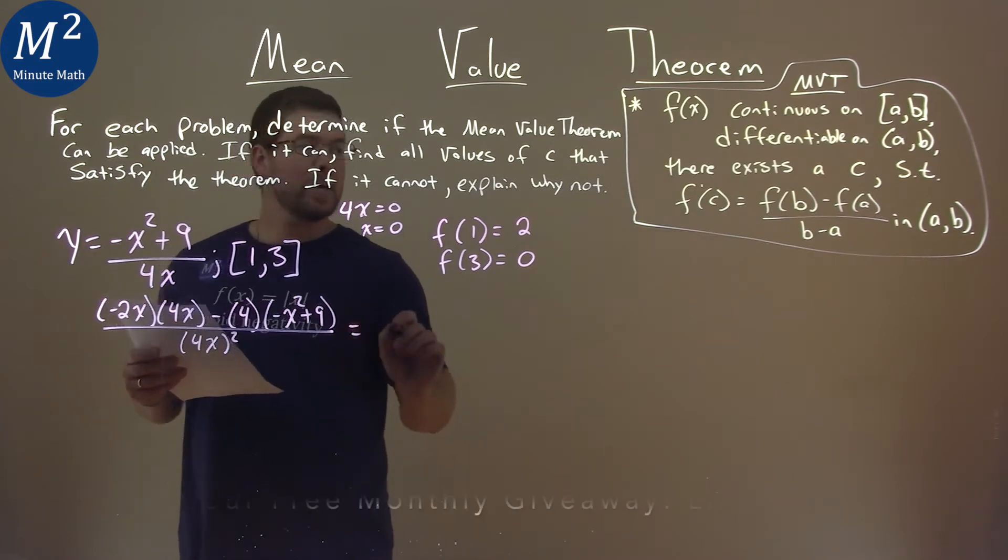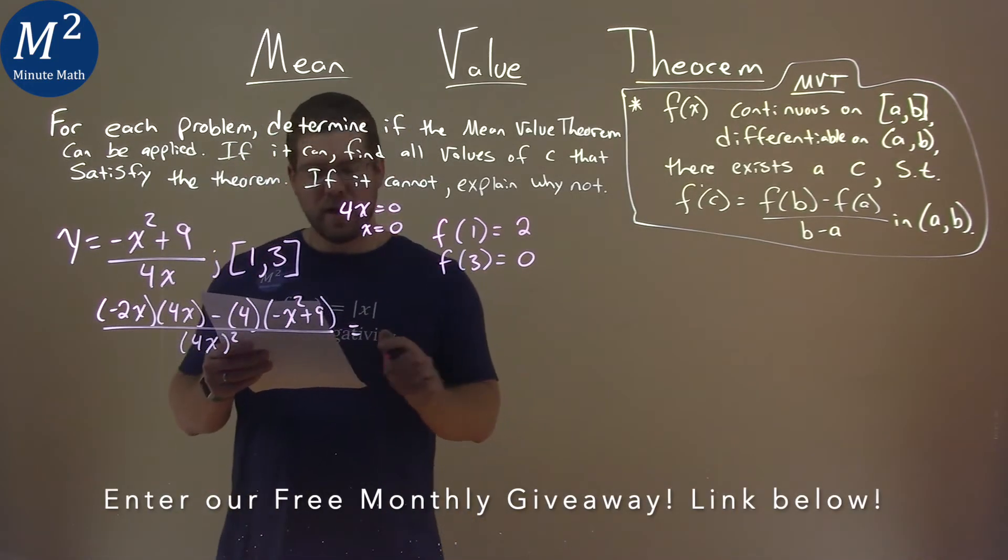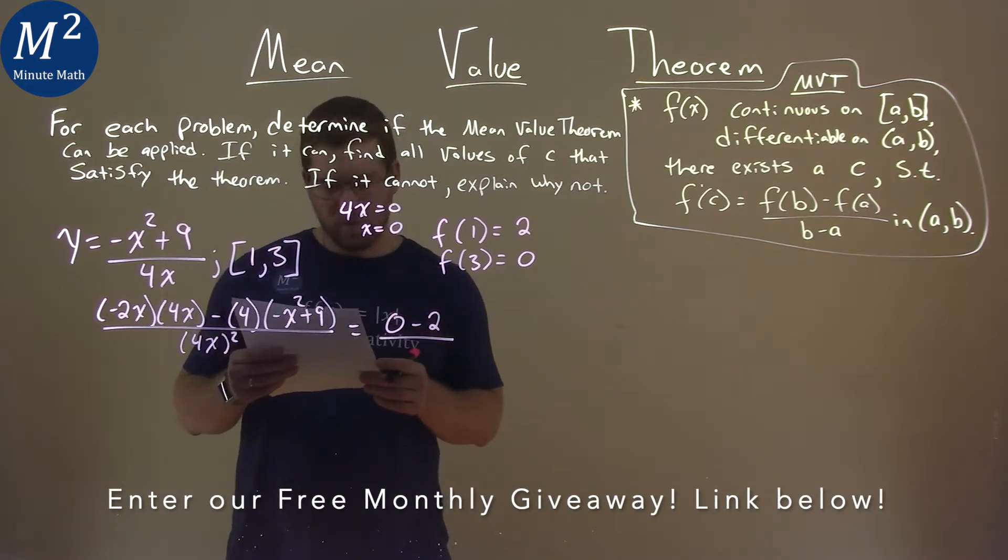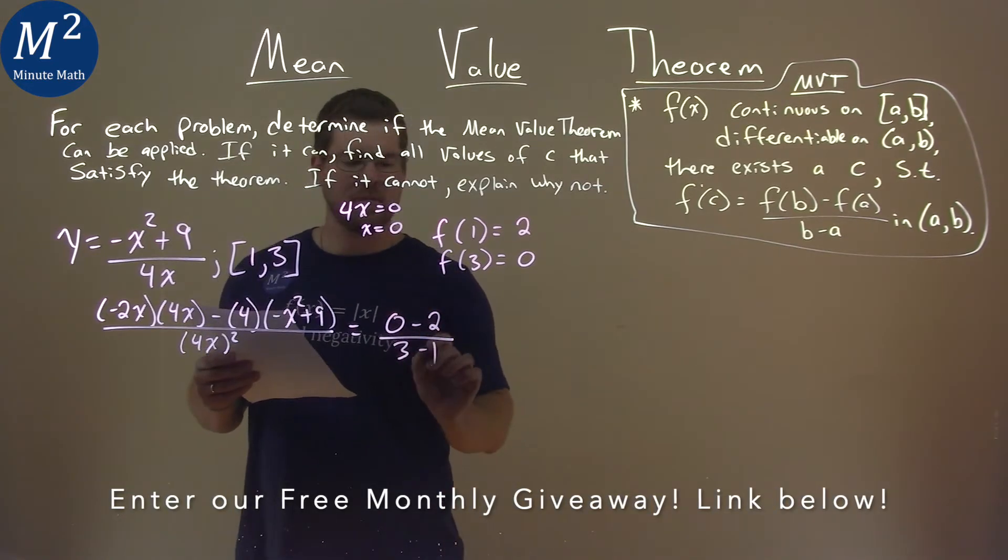From there, we set that equal to f of b minus f of a, which is 0 minus 2, over b minus a, 3 minus 1.